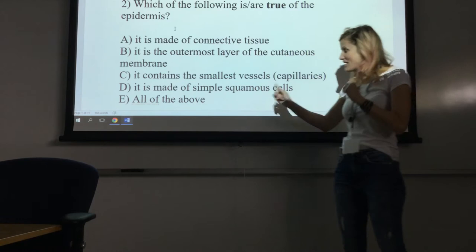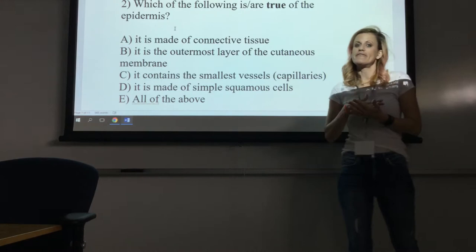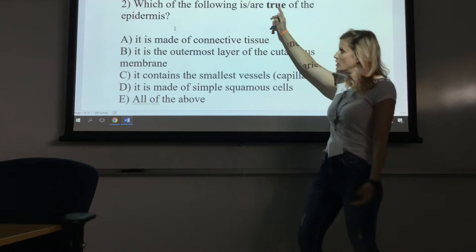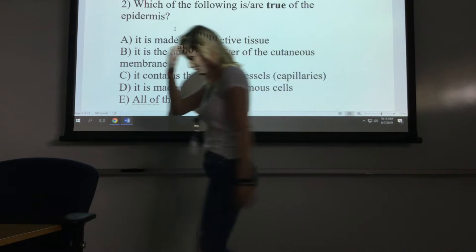Is it made of simple squamous cells? Don't be tricked. It is made of squamous cells, but it's stratified squamous epithelial tissue — multiple layers of cells, not just one layer. So that is not correct. Which of the following is true? B — it's the outermost layer of the cutaneous membrane.